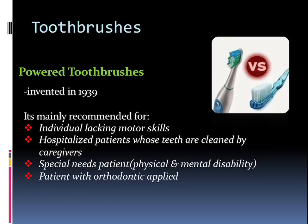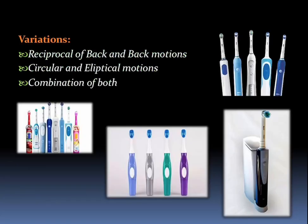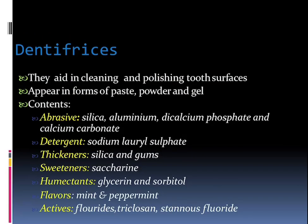Power toothbrushes are mainly recommended for individuals who lack motor skills, hospitalized patients whose teeth cannot be cleaned themselves, patients who can be cleaned with the help of caregivers, special needs patients, and patients with orthodontic appliances. There are various variations in electronic toothbrushes — reciprocal back-and-forth motions, circular and elliptical motions, or a combination of both can be given.